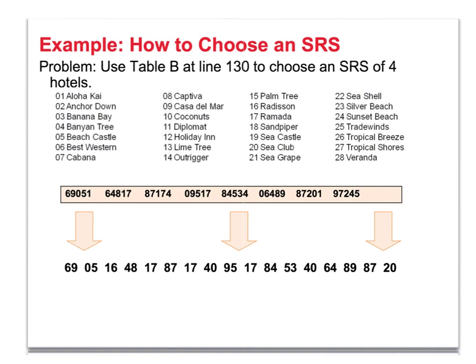Here's an example using line 130 from Table B in the back of the book — you can randomly pick whichever row you want. We're going to randomly select 4 hotels from a list of 28 hotels for some sort of study. I've assigned each hotel a 2-digit number from 01 to 28. Here's what line 130 looks like: the numbers are grouped in sets of 5 for easier reading, and you break them up into 2-digit numbers.